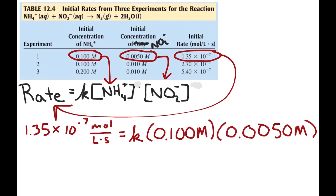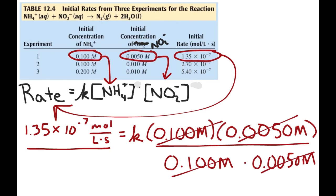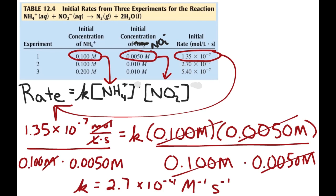When we substitute all that in, we get an expression that we can solve by dividing both sides of the equation by the concentrations 0.100 molar and 0.0050 molar. This allows us to cancel out everything with the K and get our value. Pay attention to units: when you solve for K, we see that one of the moles per liter cancels but the other one does not. After doing the calculation, we see that K is equal to 2.7 times 10 to the negative 4th per molar per second.